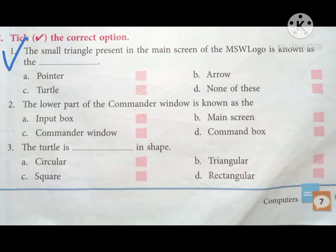Number two: The lower part of the commander window is known as the: A. Input box, B. Main screen, C. Commander window, and D. Command box. So as we have learnt that the commander window is divided into two parts—one is input box, another is recall list box—and the lower part of the commander window is known as the input box, that is number A.